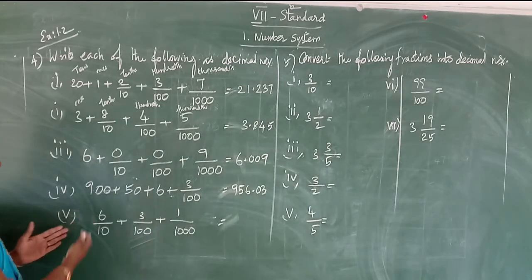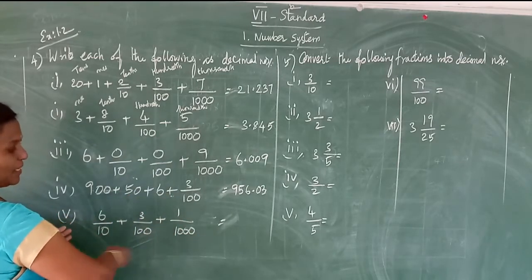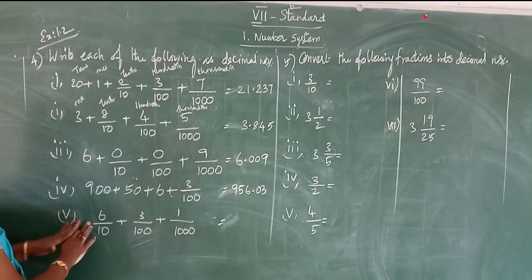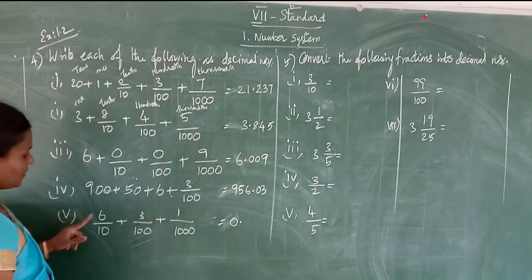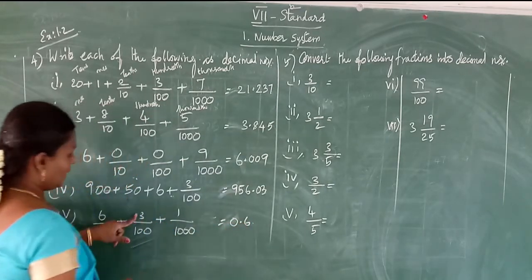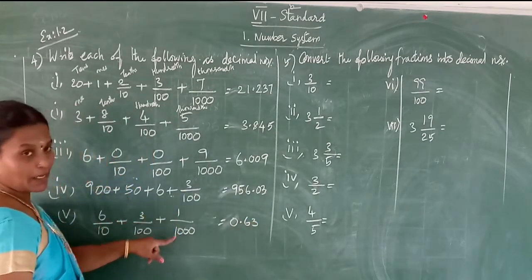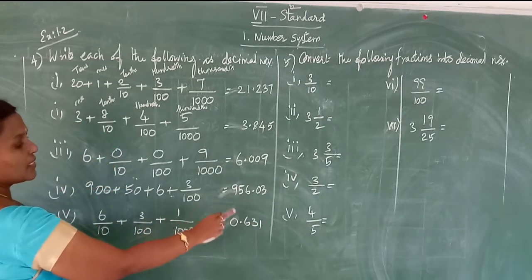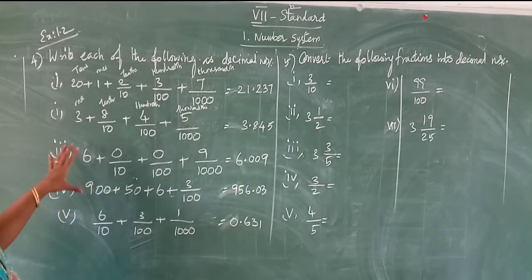See the fifth one. There is no whole part — only the decimal part in expanded form. So the whole part is zero. The tenths place is 6, hundredths place is 3, thousandths place is 1. So 0.631.